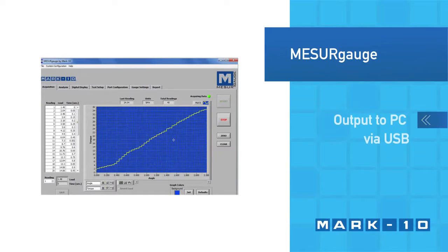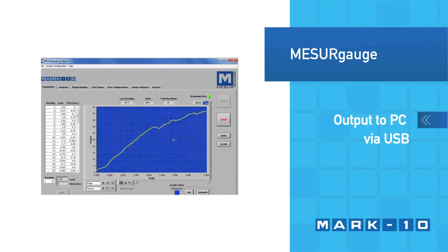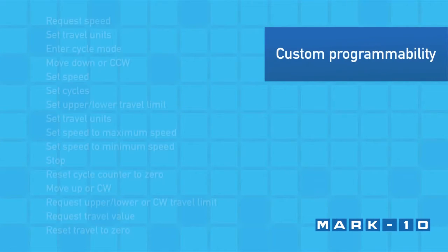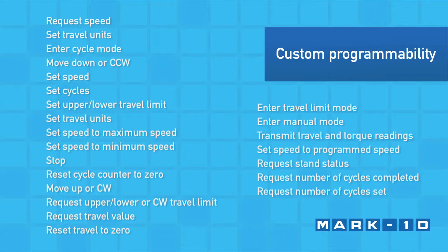Torque and angle data can be output to a PC via USB for graphing and reporting. Custom applications can also be developed utilizing its ASCII command set.